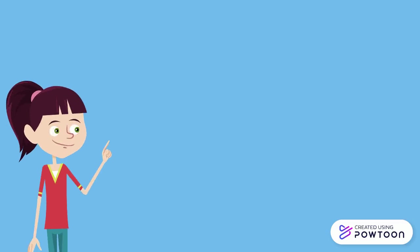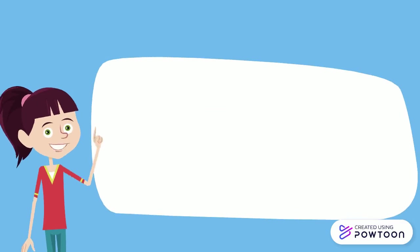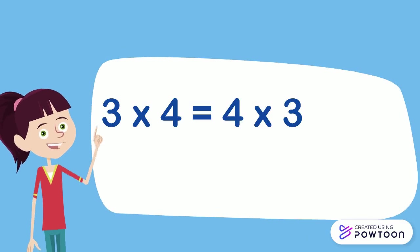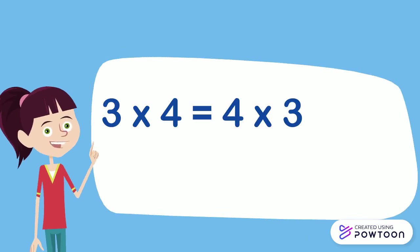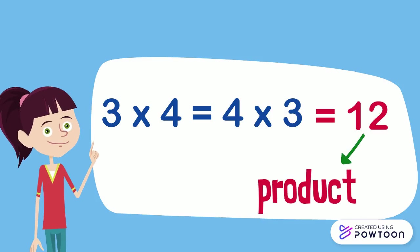So when you multiply two numbers, you can do it in any order you want. For example, you can say 3 times 4 or 4 times 3 is equal to 12. The number 12 is then called the product.